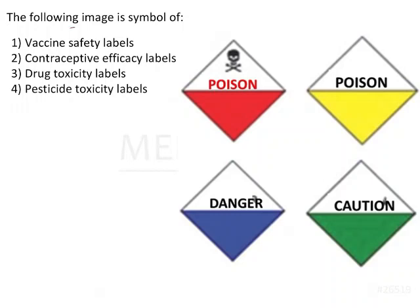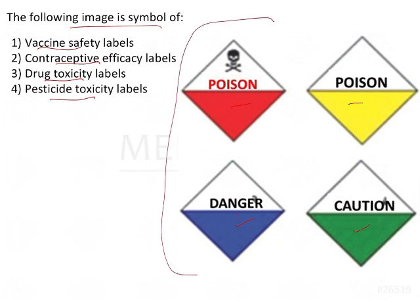In this image-based question, we have to identify the symbol given in the image. The symbols are marked as poison, danger, and caution with different colors — red, yellow, blue, and green. The options were regarding vaccine safety, contraceptive, drug toxicity, and pesticide toxicity. Without wasting time, we will go into the explanation because it's a direct pick question.